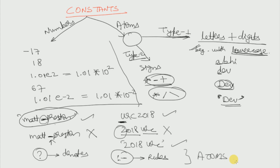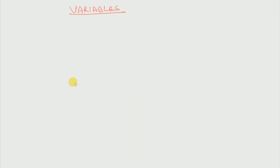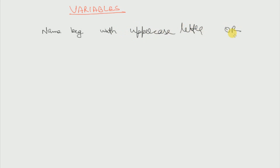This is all about constants. Next we shall see what are variables. Variables are just like constants but with the only rule that the name begins with an uppercase letter or an underscore. So the name begins with either an uppercase letter or an underscore. Let us see some examples — 'Answer' is valid.